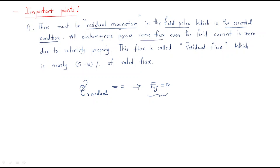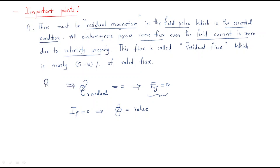Even when the field current is zero, all electromagnets have some flux. This is due to the retentivity property of magnetic materials, which is the main reason for residual magnetism.